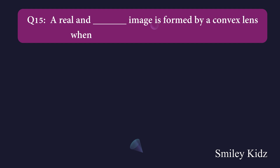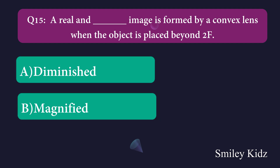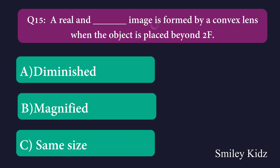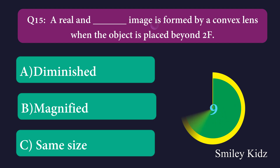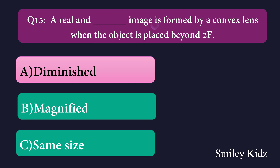Question number fifteen: A real and a dash image is formed by a convex lens when the object is placed beyond 2f. Option A: diminished, Option B: magnified, Option C: same size. The right answer is diminished. A real and diminished image is formed by a convex lens when the object is placed beyond 2f.